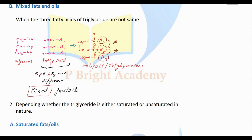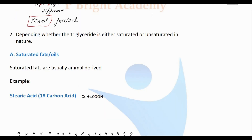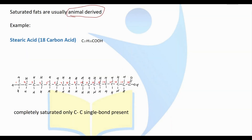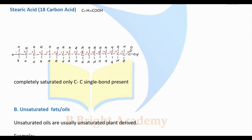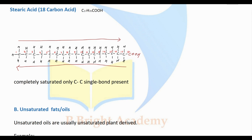Next, we can also classify fats and oils based on saturation — whether they are saturated fats and oils or unsaturated fats and oils. Saturated fats and oils are mainly animal-derived. Stearic acid is an example of a saturated fatty acid; it is an 18-carbon fatty acid with only single bonds — no double bonds — so it is saturated.